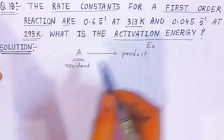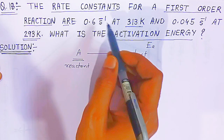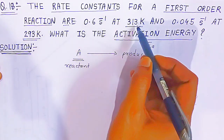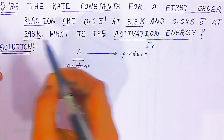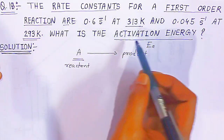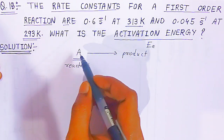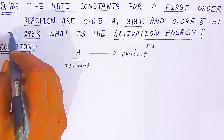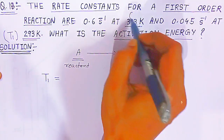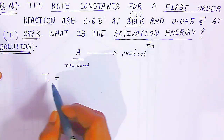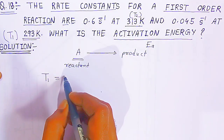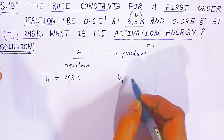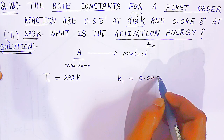Here two rate constants are given for the first order reaction: 0.6 second inverse and 0.045 second inverse at different temperatures. The initial temperature T1 is 293 kelvin — it is the lesser value. At T1, the rate constant K1 is given as 0.045 second inverse.